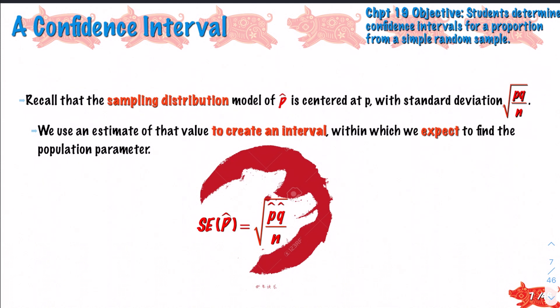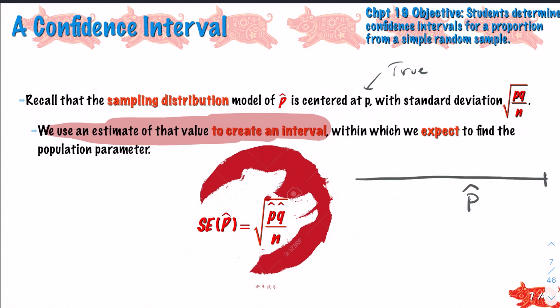Recall that the sampling distribution model of p-hat is centered at the true population proportion with a standard deviation of the square root of pq over n. This is a review. We use an estimate of that value to create an interval within which we expect to find the population parameter. So think of a number line: we know our sample value is here, and we want to reach our arms out to the right and to the left some equidistant amount, and we want to determine with some level of certainty - can we figure out where p is?